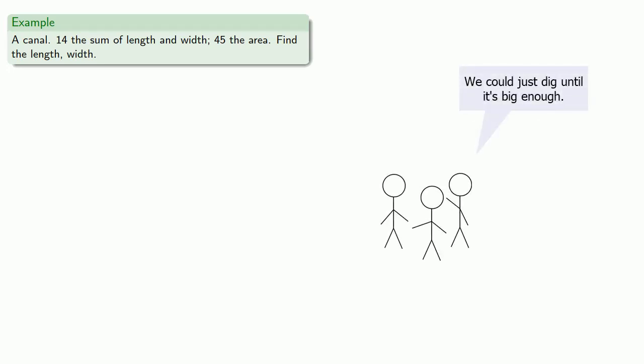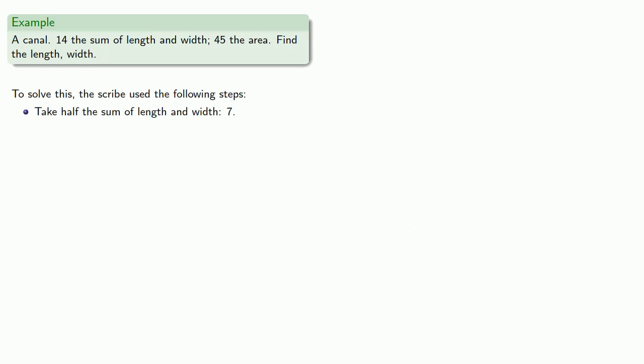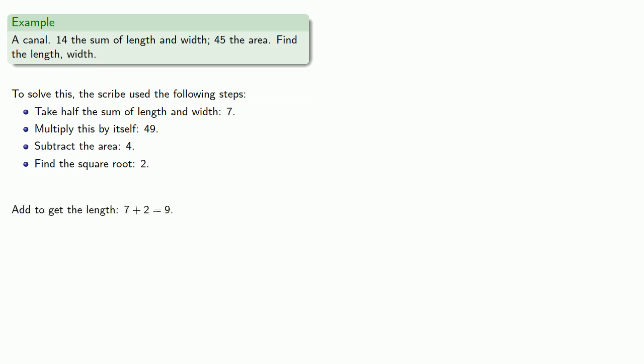The scribal solution would be something along the following lines. Take half the sum of the length and width — 7 — multiply this by itself: 49. Subtract the area: 4. Find the square root: 2. So we'll add to get the length — 7 plus 2 gives us 9 — and subtract to find the width — 7 minus 2 equals 5.